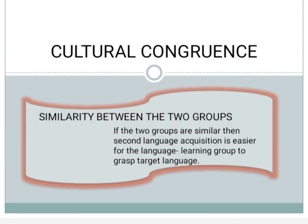The next factor is cultural congruence, which refers to the degree of similarity between two groups. If the two groups are similar, then second language acquisition is easier for the language learning group to grasp the target language.